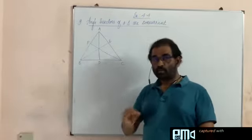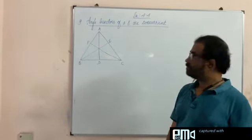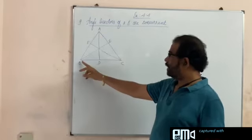What to prove? Angle bisectors of a triangle are concurrent. So for a triangle we can draw three angle bisectors.